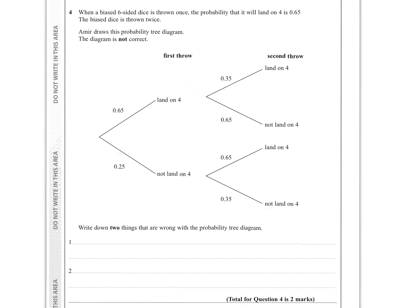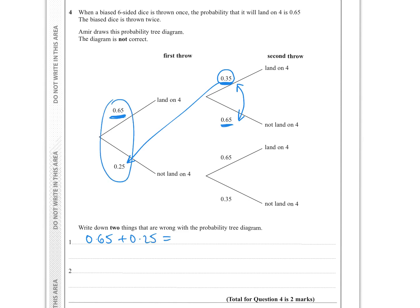Question four: when a biased six-sided dice is thrown once, the probability that it lands on four is 0.65. I can already see an error because the values 0.65 and 0.25 are the wrong way round — 0.65 plus 0.25 does not equal 1, which is what the probabilities must add up to. The probability of not four should be 0.35. The second mistake is that the probabilities on the second throw are the wrong way round.